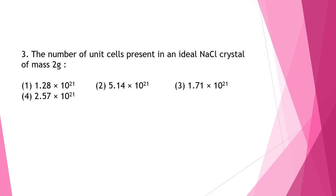Question 3, the number of unit cells present in an ideal NaCl crystal of mass 2 grams is? For 2 grams NaCl, the number of NaCl atoms will be 2 into Avogadro number that is 6.022 into 10 to the power 23 divided by the molar mass that is 58.5.